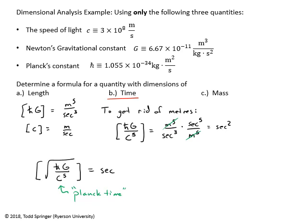That's a quantity formed from those three fundamental constants which has units of time. The Planck time turns out to be 5.4×10⁻⁴⁴ seconds — a very, very small time. Nature kind of chooses this really short time as the unit it would prefer to measure time in.